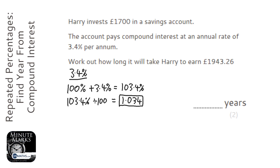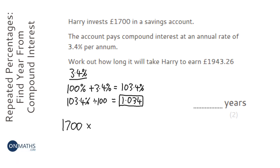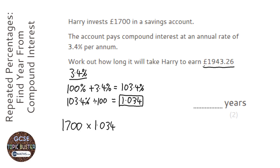There are very advanced ways of answering this question using logarithms, but at GCSE you don't learn about them, so we've got to think of another way. We know that we start off with 1700 and we know that if we multiply by 1.034 it will increase by 3.4 percent. We know the number we want to get to.